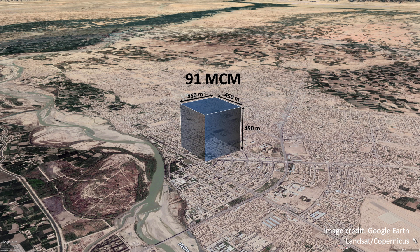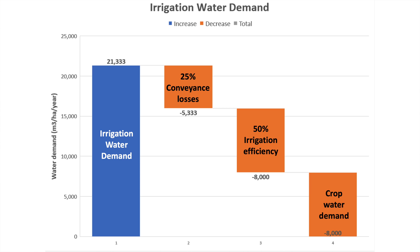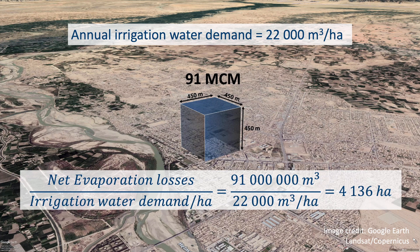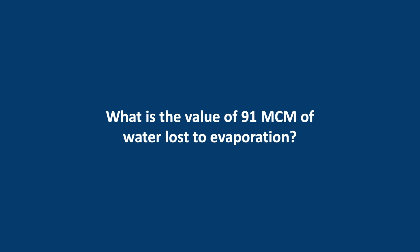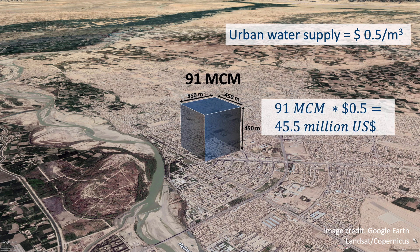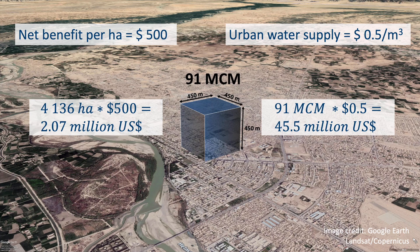Let's have a look at irrigation. We will assume an annual irrigation water demand of 22,000 cubic meters per hectare. This is calculated from a crop water demand of 8,000 cubic meters per hectare per year, 25% conveyance losses in the canals, followed by a field application efficiency of 50%. The water lost to evaporation each year from the Kajaki Reservoir could be used to irrigate over 4,000 hectares of land — that's equivalent to 40 square kilometers. If we assume domestic water supply is worth $0.50 per cubic meter, then 91 MCM would have a value of over $45 million. If we assume a minimum net benefit of irrigated agricultural land of $500 per hectare, then 4,136 hectares would be worth over $2 million US dollars per year.